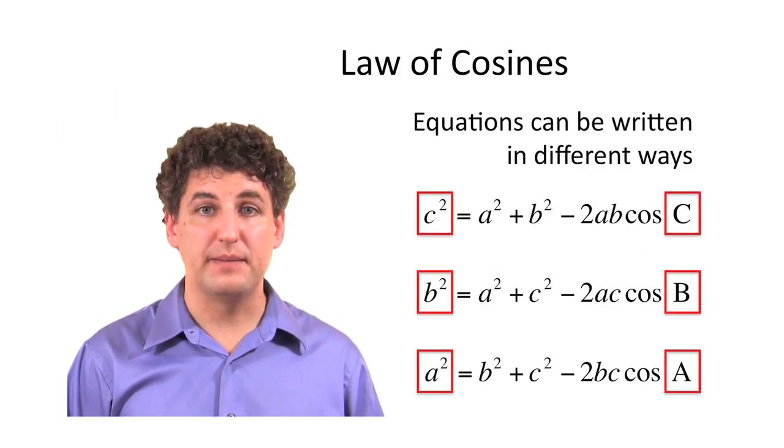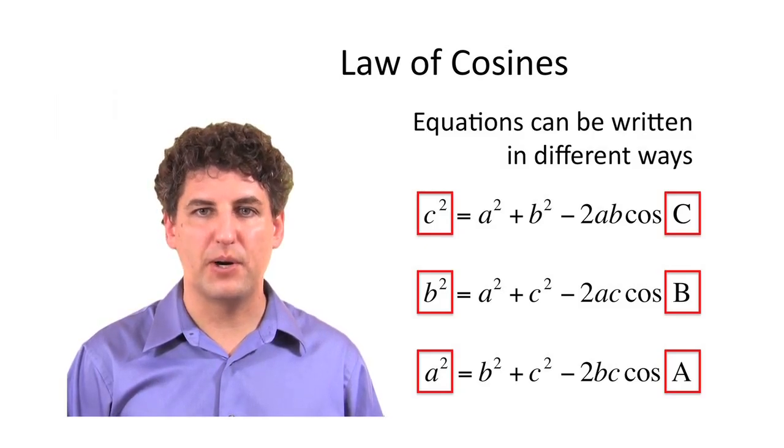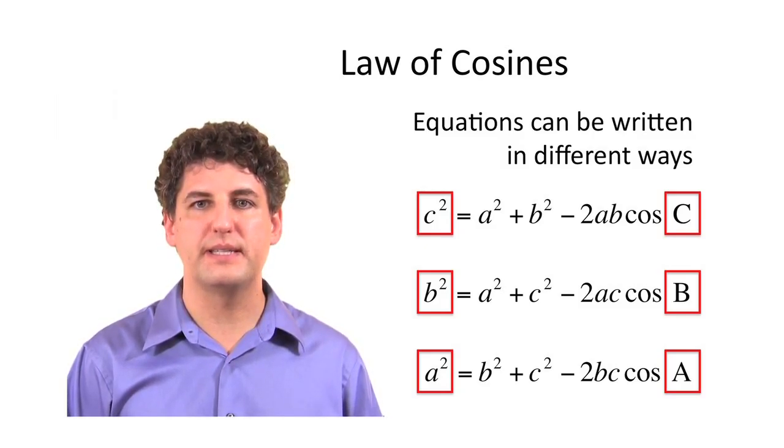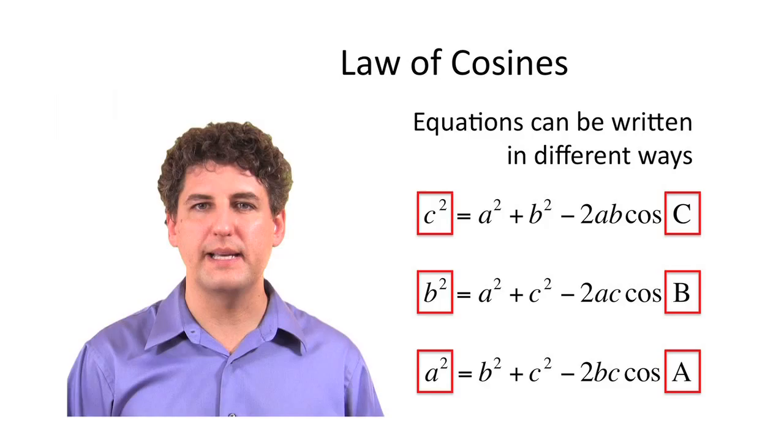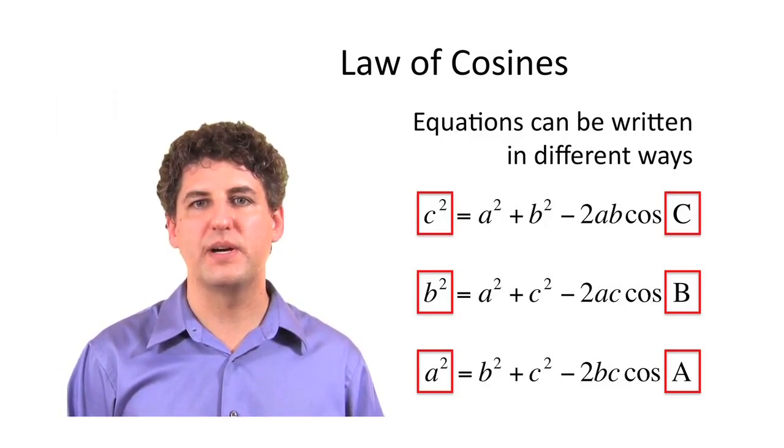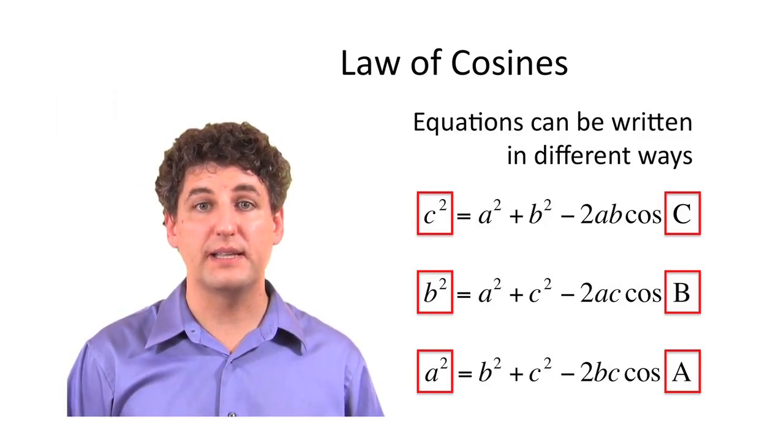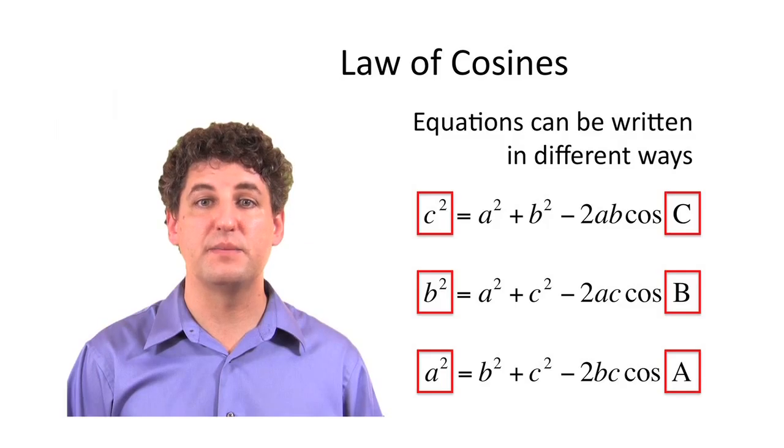To break it down a little bit and make it a little easier for you to memorize, if you just focus on the beginning part of the equation, you'll notice that the beginning part looks like another formula called the Pythagorean theorem. That's the one that says c squared is equal to a squared plus b squared. So, you know, if you take a look at that, you've got part of the law of cosines memorized.